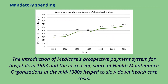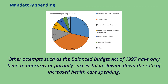The introduction of Medicare's prospective payment system for hospitals in 1983 and the increasing share of health maintenance organizations in the mid-1980s helped to slow down healthcare costs. Other attempts such as the Balanced Budget Act of 1997 have only been temporarily or partially successful in slowing down the rate of increased healthcare spending.